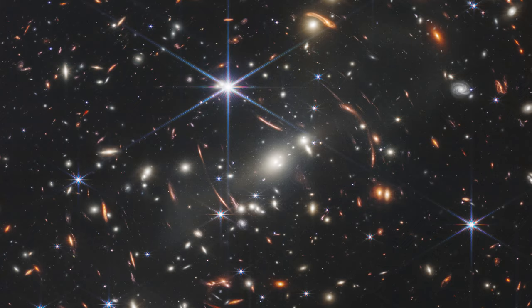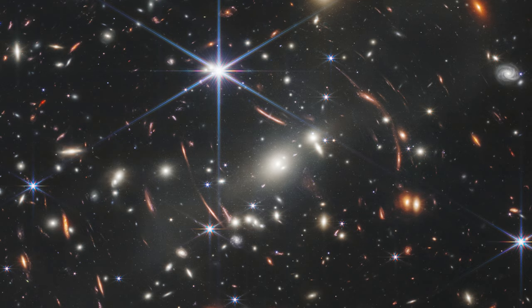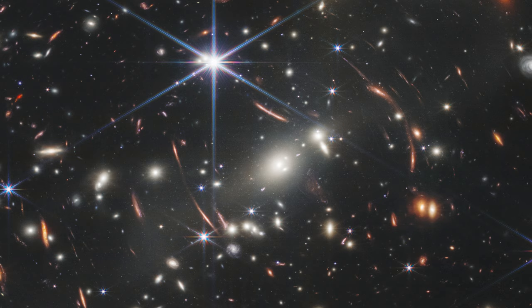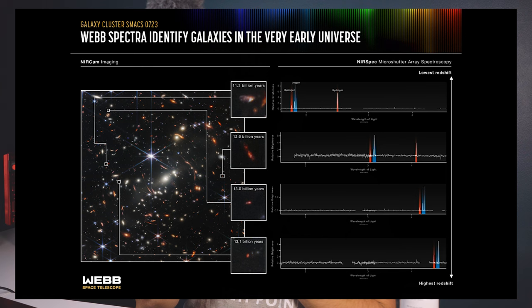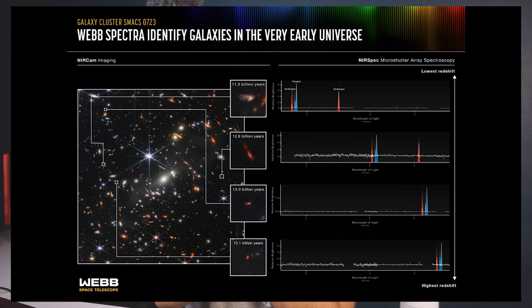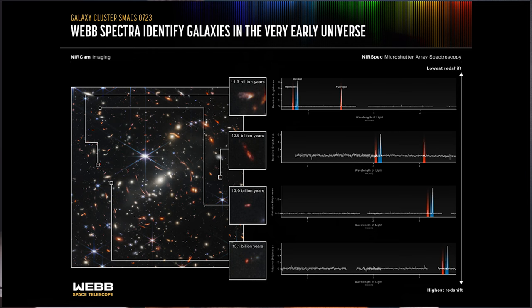First we have SMACS-0723. This is a massive foreground galaxy cluster which is magnifying and distorting the light of objects behind them due to something known as gravitational lensing. One of the faintest galaxies in this photo lies an astounding 13.1 billion light years away. And for the first time, scientists are now able to determine the chemical composition of this galaxy due to the resolution and the instruments on the James Webb Space Telescope.